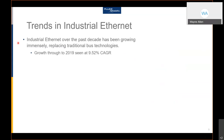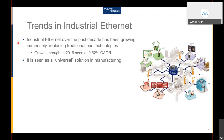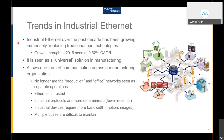There are a number of research papers showing the growth — it's around 9–10% compound annual growth. Industrial Ethernet is seen as a universal solution for manufacturing. What's key is it allows one form of communication across the manufacturing organization. No longer are production networks and traditional office networks separate.